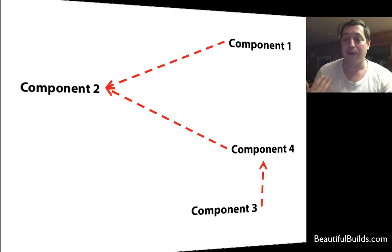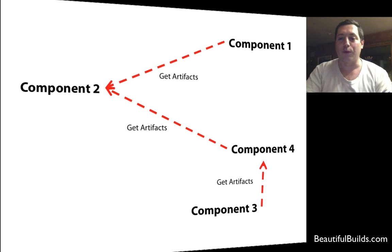Compile those components and get the artifacts from those components into component two. That's what we would do. Get the artifacts from component three into component four so that it can build. Then get component four artifacts into component two so that can build, etc. All great, really. Some of my best friends do that.